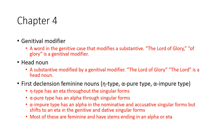Genitive modifier: a word in the genitive case that modifies a substantive. For example, 'the Lord of glory' — 'of glory' would be the genitive modifier. Head noun: a substantive modified by a genitive modifier. In 'the Lord of glory,' 'the Lord' is the head noun because it is being modified by the genitive modifier.